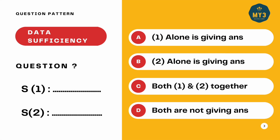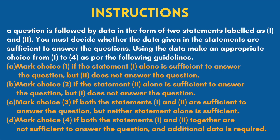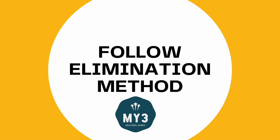Every question will be given with a question followed by statements 1 and 2, and option choices A, B, C, D — 1 alone, 2 alone, both together, both together also not sufficient. These are the instructions given under every data sufficiency question. You must decide whether the data in the statements is sufficient to answer the question, then make an appropriate choice from options A to D.